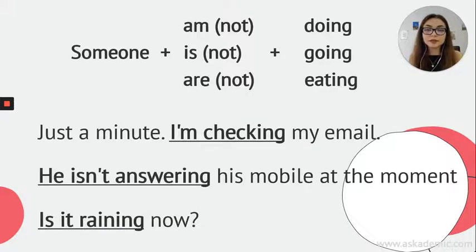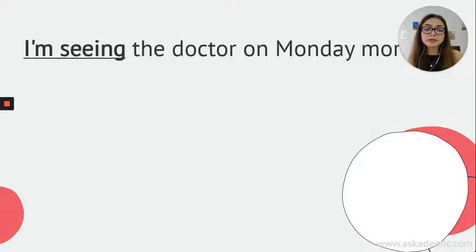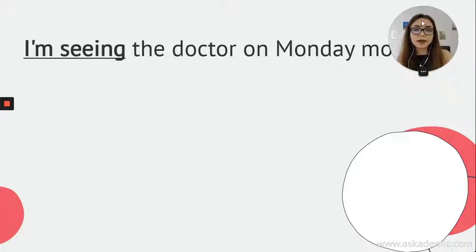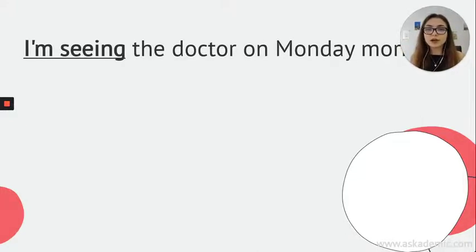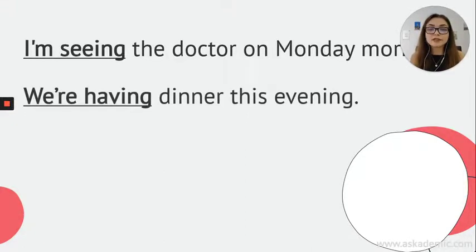Let's look at other examples. I'm seeing the doctor on Monday morning. Here, it's talking about the future — it's not Monday today, but I'm seeing the doctor on Monday morning. It's something planned for the future, something arranged. So we can use present continuous tense while talking about the future for something planned. Like: We're having dinner this evening — we have arranged this meeting. They're talking about the future; they have something planned, something arranged.